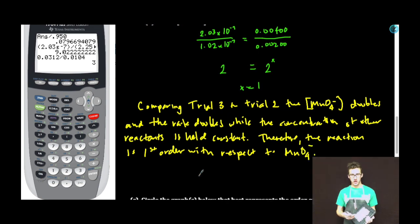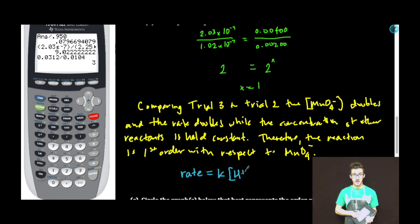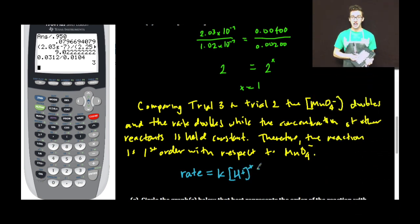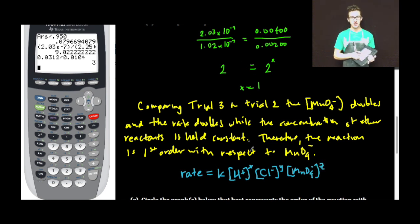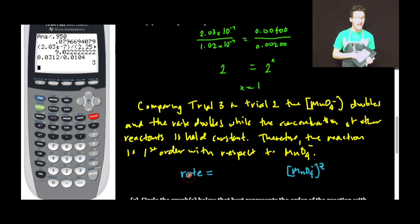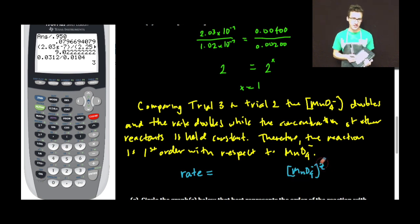Remember, think about your rate laws. The rate of the reaction equals the rate constant k times the concentration of hydrogen ion to some power, times the concentration of chloride ion to some power, times the concentration of permanganate ion to some power. The rate constant is a constant. We keep hydrogen ion and chloride ion concentrations constant, so the rate is really dependent on the concentration of permanganate ion raised to some order — that's what we're doing with the math.